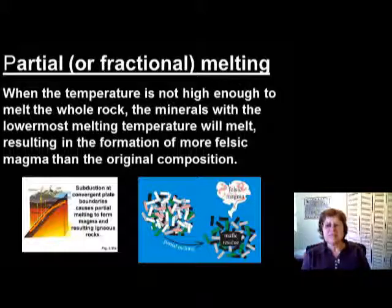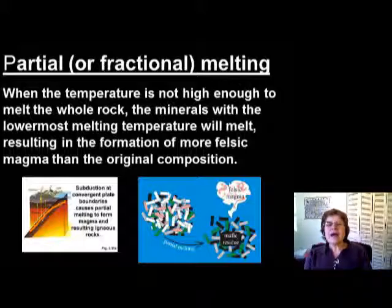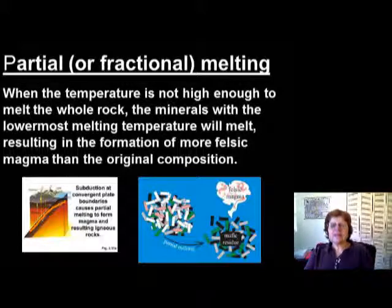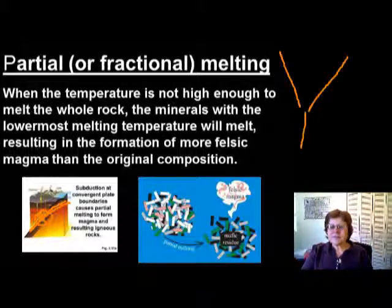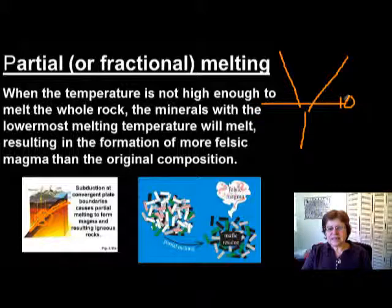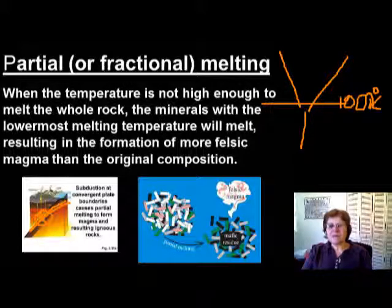When you have an oceanic-continental plate boundary and the oceanic crust is going under the continental crust, the melting will occur at this place and around this depth. The temperature is not higher than about a thousand degrees Celsius, and you have the Bowen's reaction series here at around a thousand degrees Celsius.